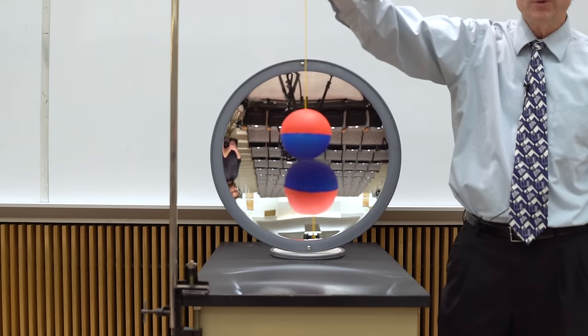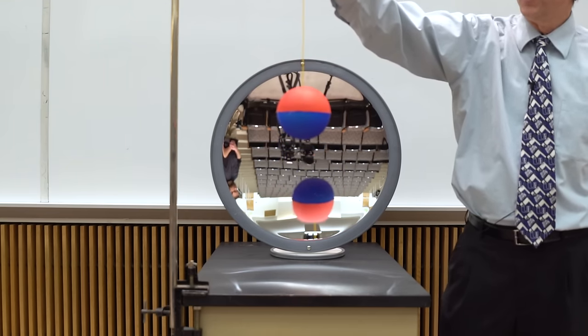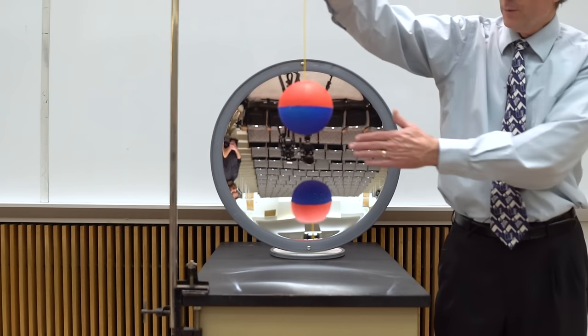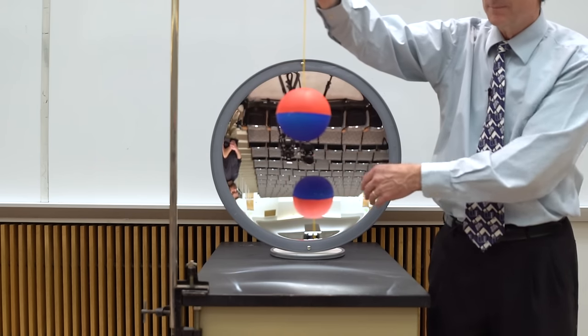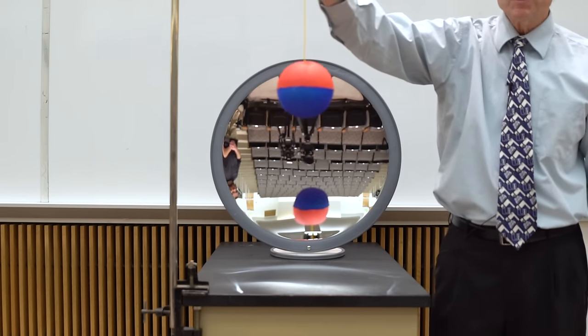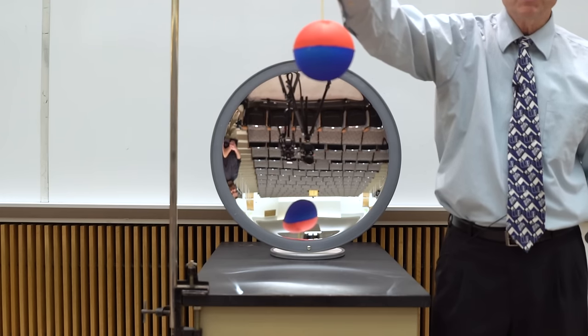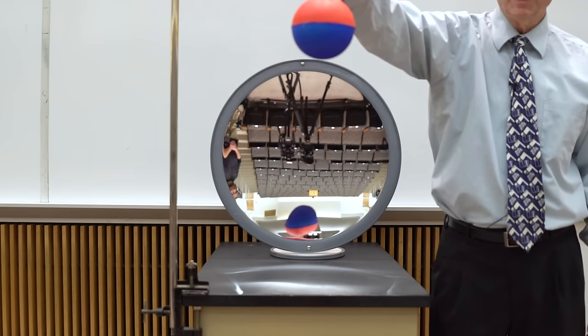Then as we continue to move further and further away from the mirror, farther from the focal point, which is right here, the image gets smaller and smaller but it continues to be inverted until we get out to here.